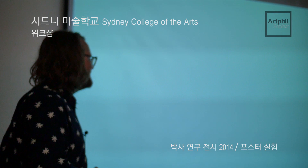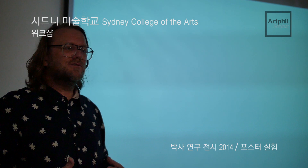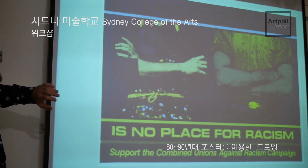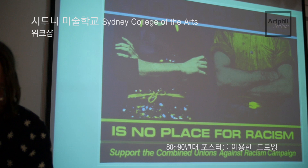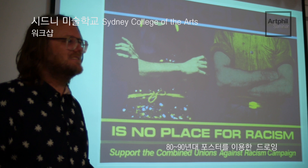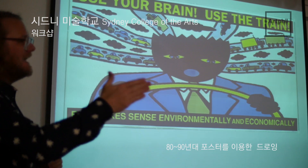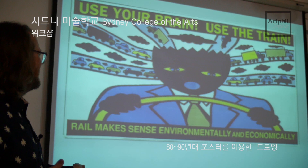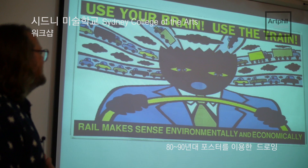The Redback Graphics Series from 2014 is a series of drawings I made — not really collages, not screen prints, just drawings with pencil. My inspiration was a famous Australian poster collective called Redback Graphics. Redback Graphics is a famous Australian poster collective from the 1980s — this image was from 1985. It's a very 80s design aesthetic: a sort of dated aesthetic language that's very direct, almost confrontational, almost speaking to the audience like they're children. 'Use your brain. Use the train. Rail makes sense environmentally and economically.'